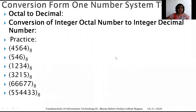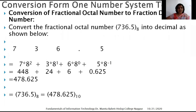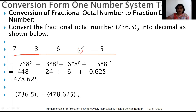There are some integer octal practice numbers to be converted into integer decimal numbers. Now, how to convert a fractional octal number into a fractional decimal number — the same pattern applies: first step is to split the numbers, then from the decimal point go right to left for the integer part and left to right for the fraction part.